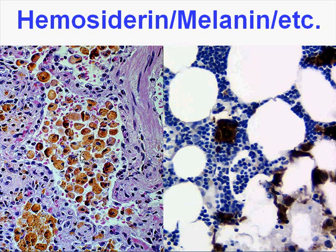These pigments might normally be in places where you would expect to see melanin, bile, or lipofuscin. If you suspect a pigment is melanin, you can do a melanin stain, an HMB45 stain, or an S100 stain.